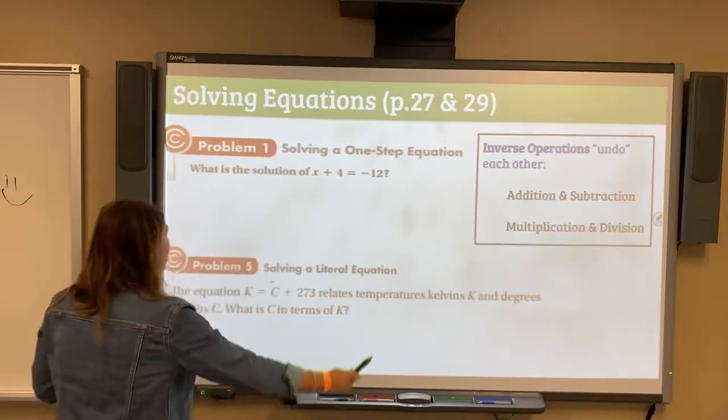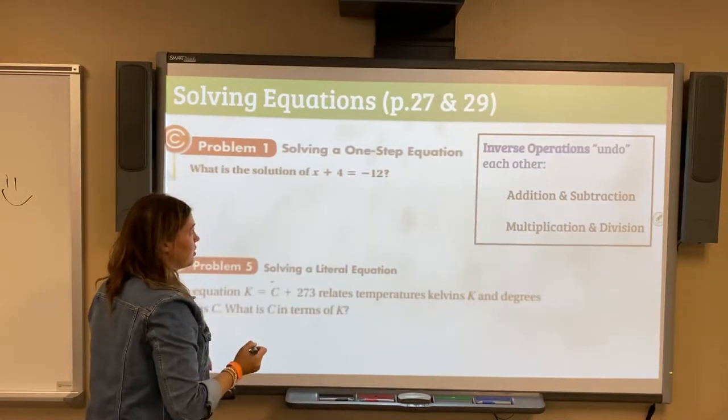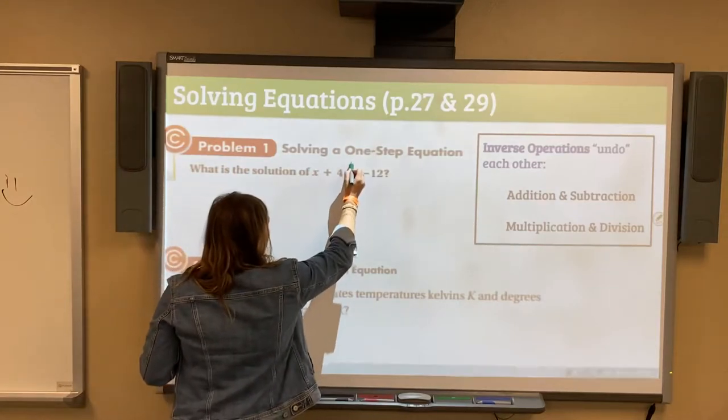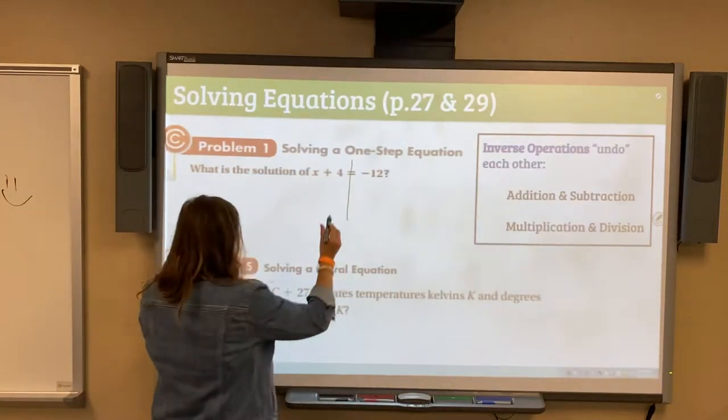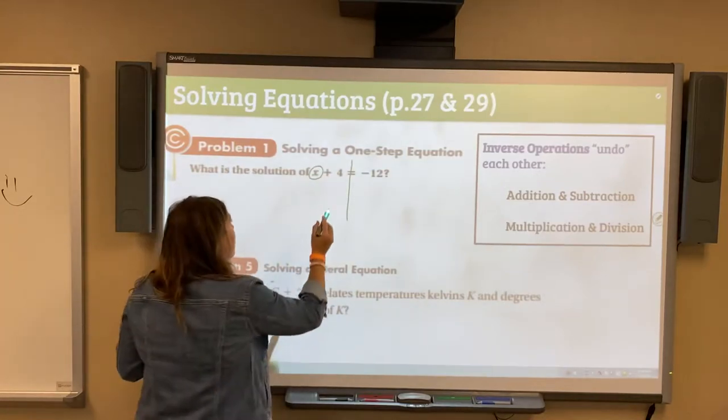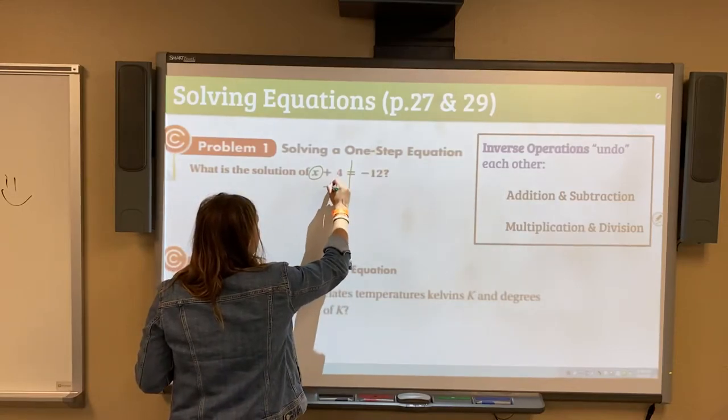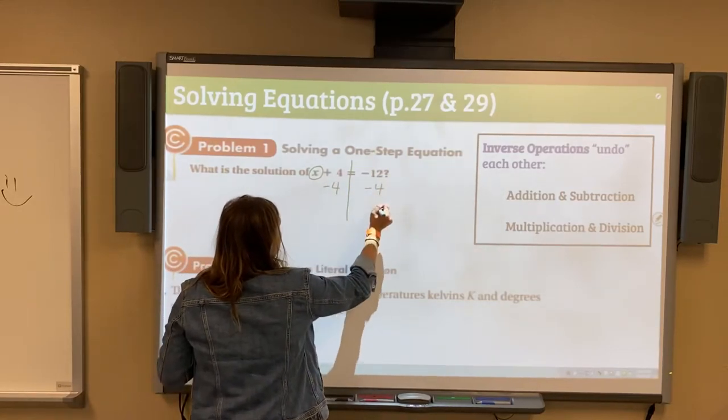Let's talk about this one. What is the solution of x plus 4 is equal to negative 12? You can always think of the equal sign like a fence. And we're solving for x. That's variable. We need to undo this addition of 4 by subtracting 4 to both sides.